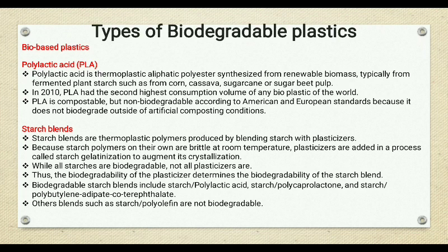Among biobased plastics, the first type is polylactic acid, also called PLA, which is a thermoplastic polymer derived from renewable biomass, typically from fermented plant starch such as corn, sugarcane, or sugar beet pulp. PLA is compostable but not a biodegradable plastic according to American and European standards.